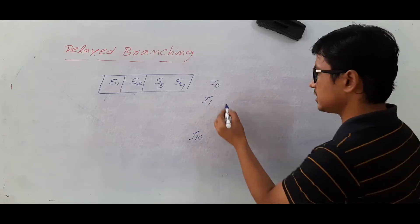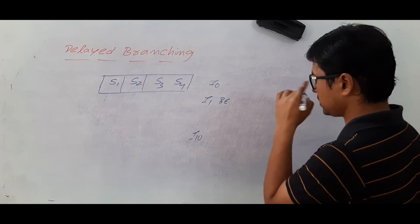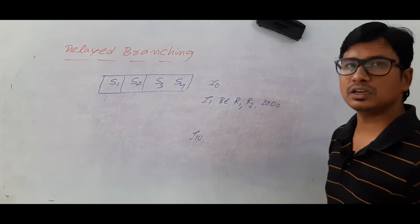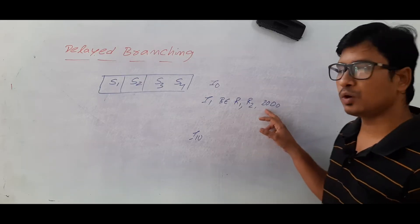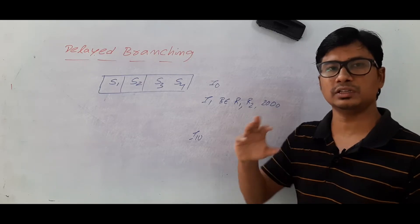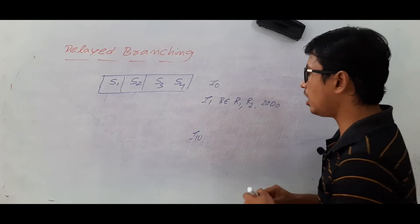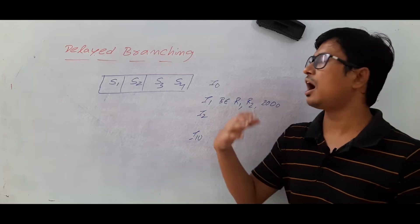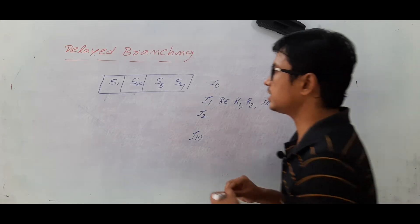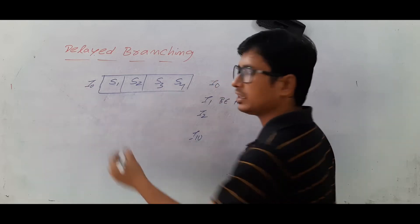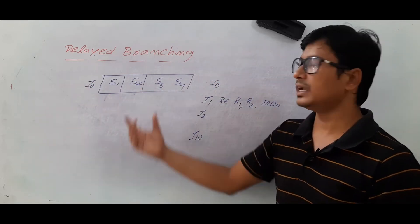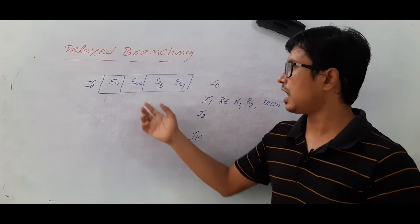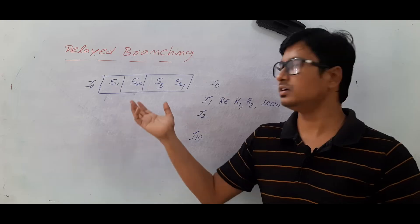If there is a branch instruction — for example, branch R1 comma R2 — whether it is conditional or unconditional, the result of the branch instruction means: should I go and fetch the instruction at the 2000 location, or fetch the next sequential instruction? This result I will come to know only after stage two. So the next instruction I have to fetch, I will come to know after stage two.